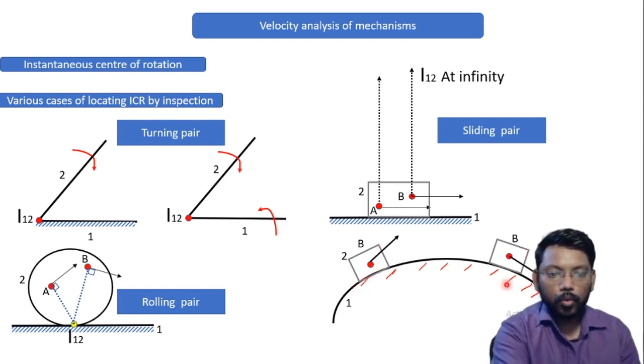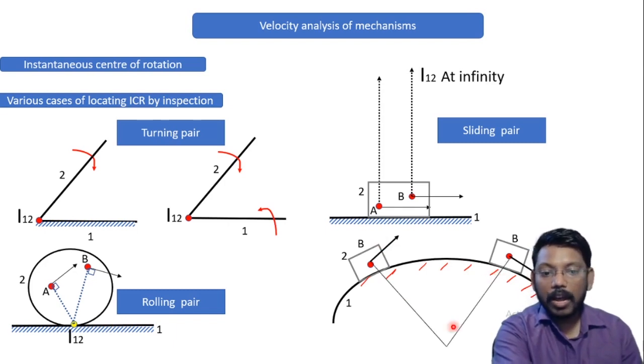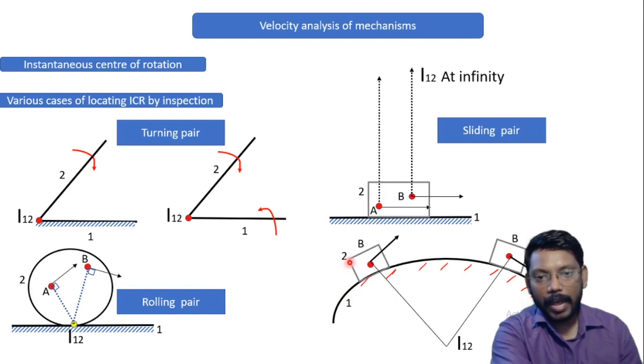So agar maine in dono velocities ko, agar maine tangent draw kiya towards the center, I can see they are intersecting at the center of this particular curve. And that particular point will become my ICR for link number one and link number two. Why? Because again the angle over there as we can see is 90 degree.